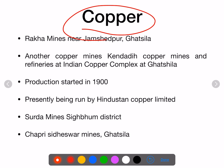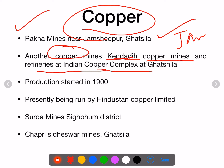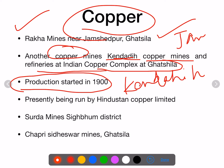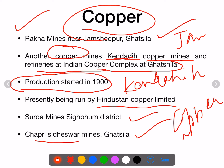The most important copper field in Jharkhand is Rakha Mines near Jamshedpur — there is also a Rakha Mine railway station. Another copper mine is Kendadih copper mines and refinery at Indian Copper Complex in Ghatsila, about 40 kilometers from Jamshedpur. Production started in 1900 and it is presently run by Hindustan Copper Limited. Other copper mines include Surda Mine, Singhbhum Chapdi, and Siddeshwar Mine in Ghatsila — all concentrated near Jamshedpur or West Singhbhum.